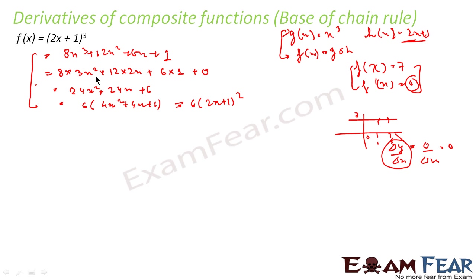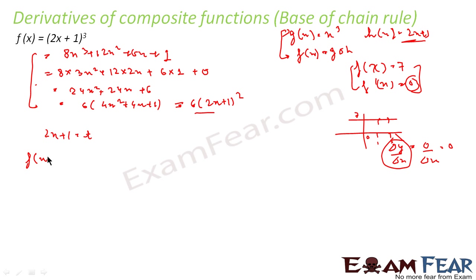Now I want to solve the same question using the composite function approach, where h(x) = 2x+1 and g(x) = x³. I will assume 2x+1 = t, so my f(x) = t³. In other words, if y = (2x+1)³ and I let 2x+1 = t, then y = t³.